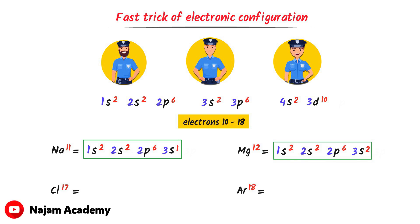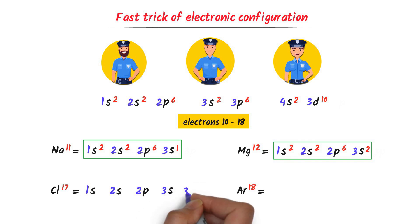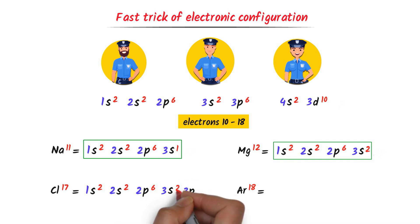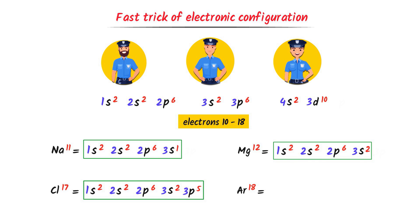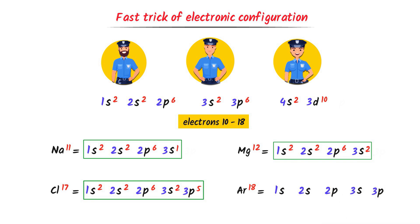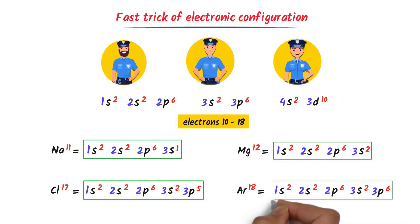Chlorine has 17 electrons: 2 in 1s, 2 in 2s, 6 in 2p, 2 in 3s, and 5 in 3p — 2+2+6+2+5=17. Argon has 18 electrons: 2 in 1s, 2 in 2s, 6 in 2p, 2 in 3s, and 6 in 3p — 2+2+6+2+6=18. I have successfully configured the electrons of these elements.